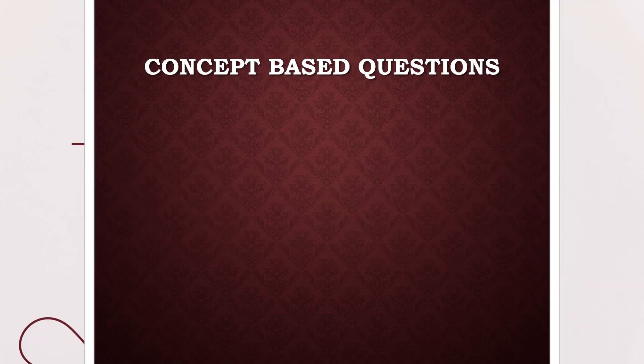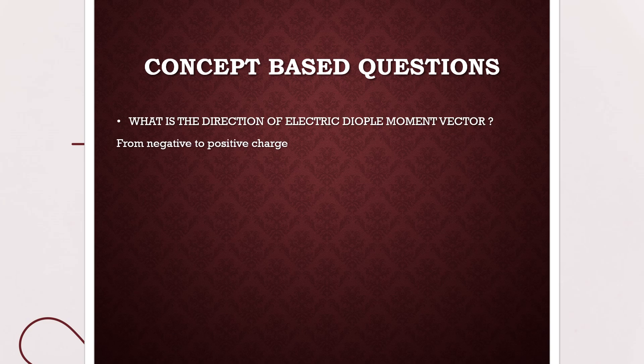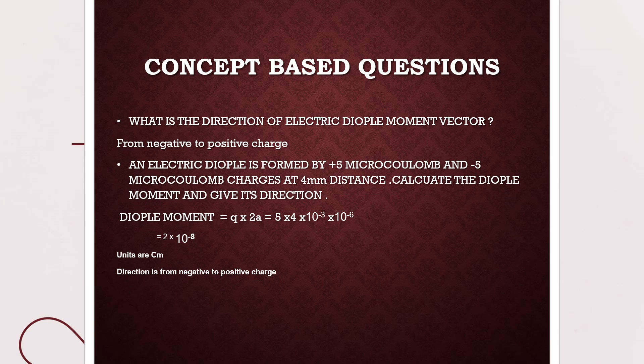Now it is time for the revision. The first question is: what is the direction of the electric dipole moment vector? Yes, it is from negative to positive charge. Another question: an electric dipole is formed by plus 5 microcoulomb and minus 5 microcoulomb charges at 4 mm distance. Calculate the dipole moment and give its direction. The direction is from negative to positive charge. For the dipole moment, we use the formula: dipole moment equals the product of the magnitude of either charge multiplied by the dipole length.